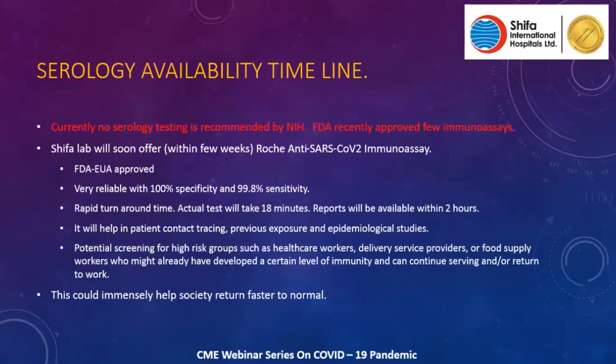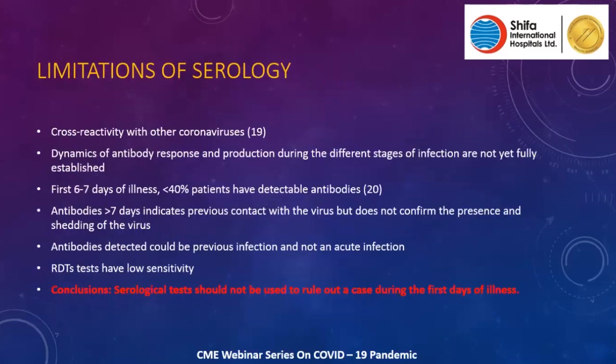Limitations of serology include potential cross-reactivity with other coronaviruses, though the assay mentioned claims it did not cross-react with any known coronavirus, hence its high specificity. Dynamics of antibody response are variable — initially fewer than 40 percent of patients may have detectable antibodies. The clinical scenario and epidemiological status must be kept in mind. As a conclusion, serology tests should not be used to rule out a case during the first days of illness; PCR is the test to use in that scenario.